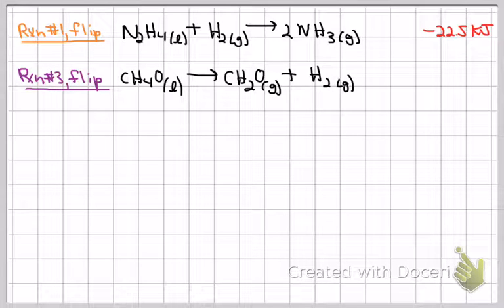But in the original reaction three, it was a product. I needed it as a reactant. You notice it's a reactant in my target. That's why I flipped it around. By flipping it, I change the sign on the enthalpy change from positive 81.2 to a negative 81.2.